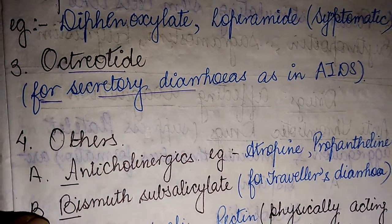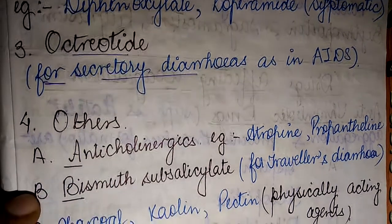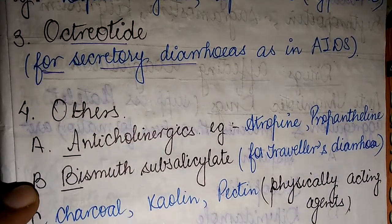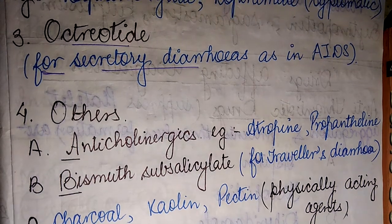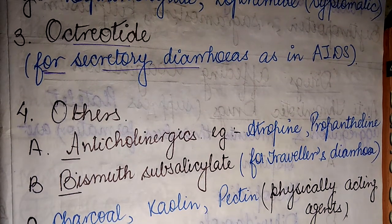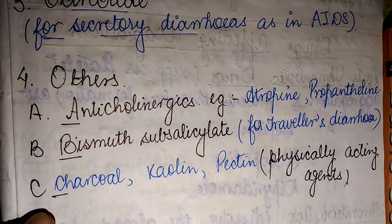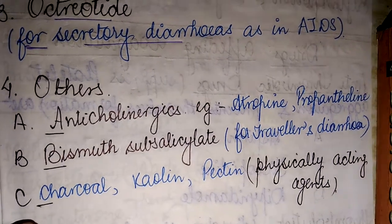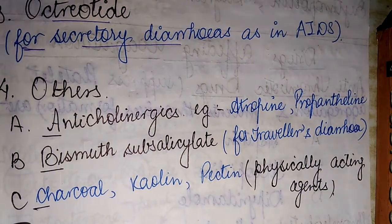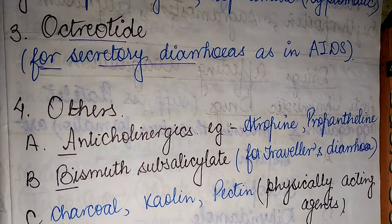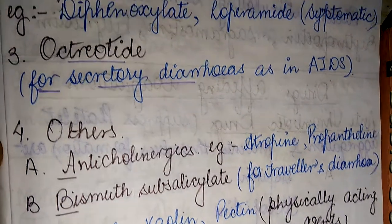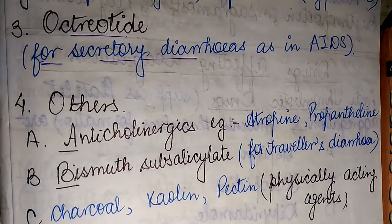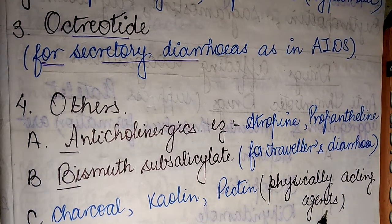B stands for bismuth subsalicylate, which is widely used in patients for treating traveler's diarrhea. C is for charcoal, kaolin, and pectin, which are also widely used in treating diarrhea. Pectin is a physically acting agent.